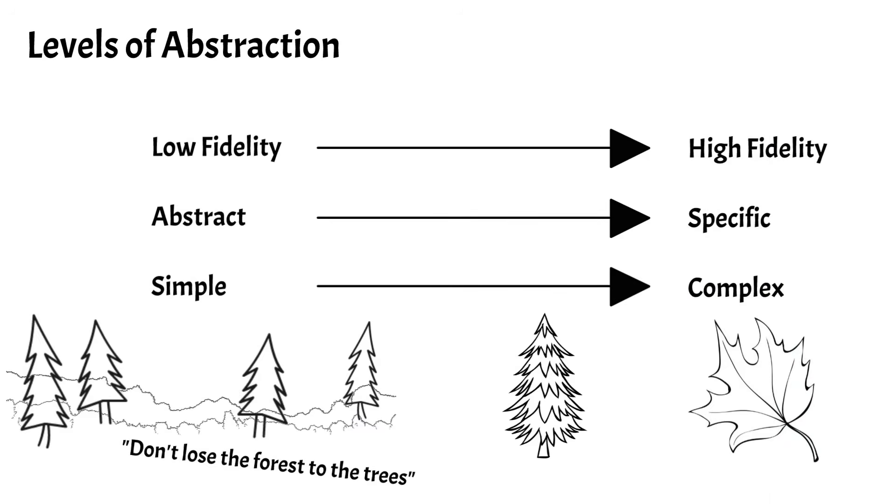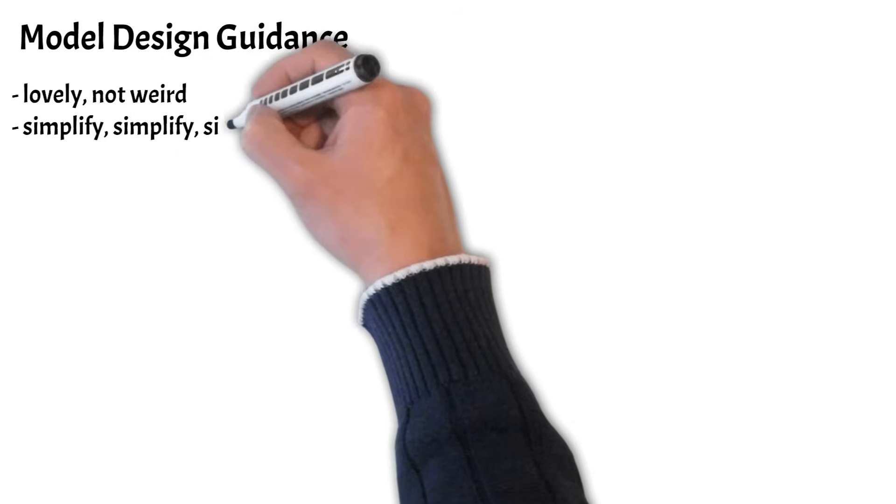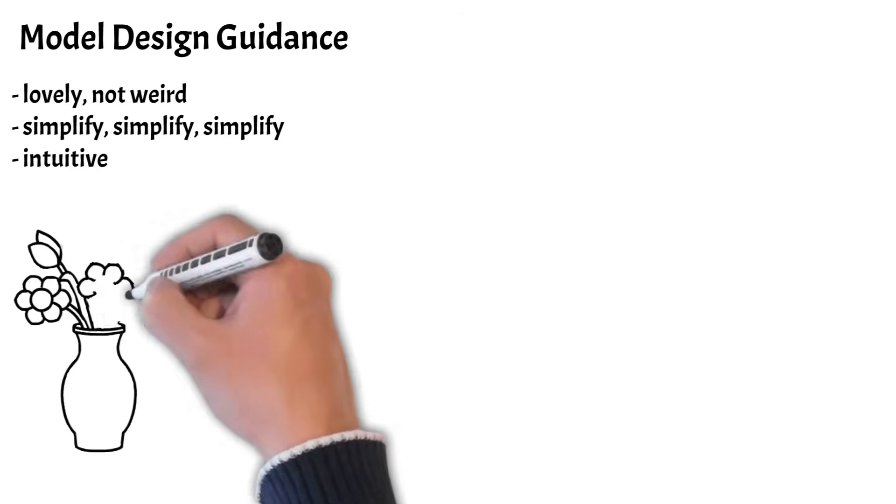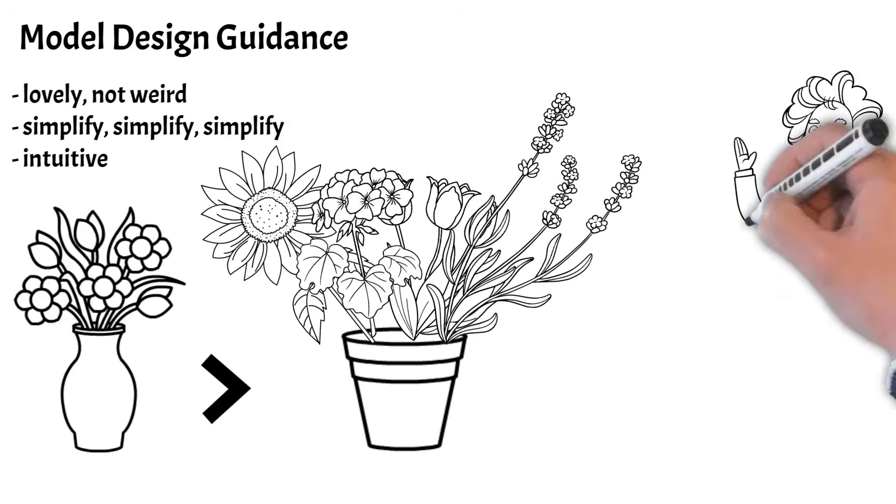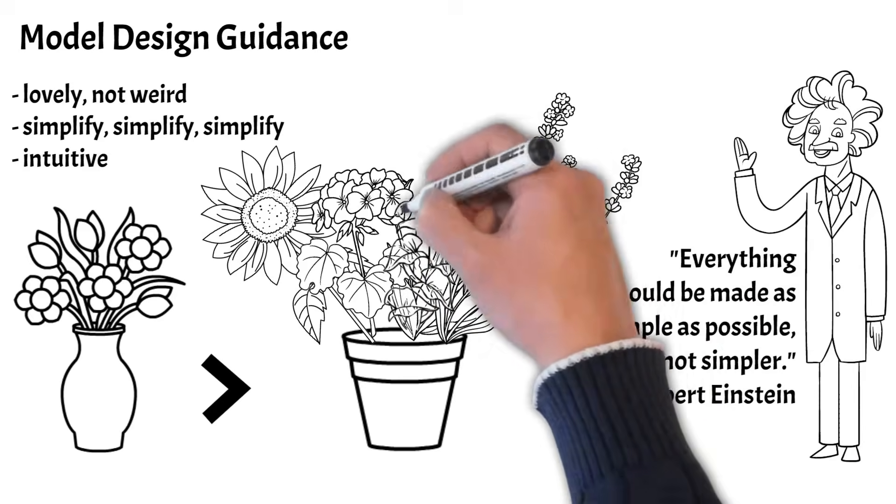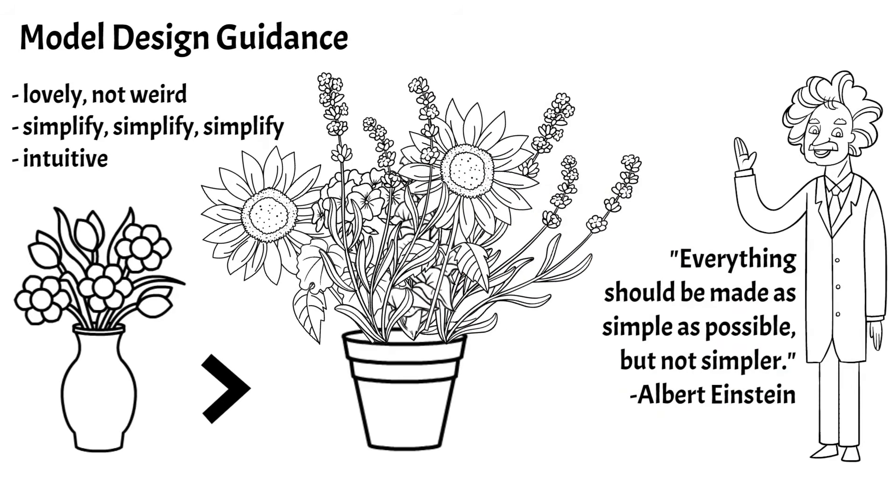More on the same topic, modelers need to be careful not to lose the forest to the trees. System architects need to design the system in such a way that it is lovely and not weird. They should focus on simplification and creating a model which is intuitive to a model reader who has never seen the model. As Albert Einstein said, everything should be made as simple as possible, but not simpler.